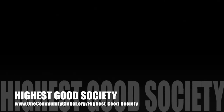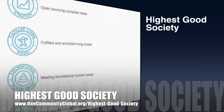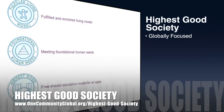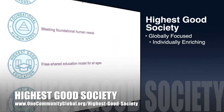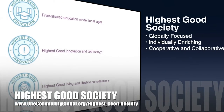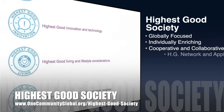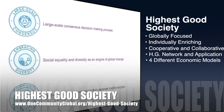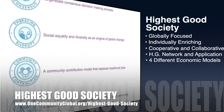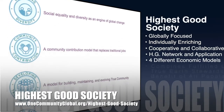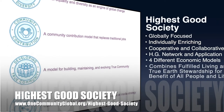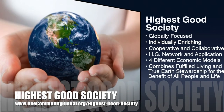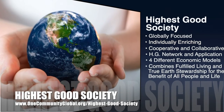The One Community approach to highest good society is globally focused, individually enriching, cooperative and collaborative. It includes a highest good network and application, four different economic models, and combines fulfilled living and true earth stewardship for the benefit of all people and all life on this planet.